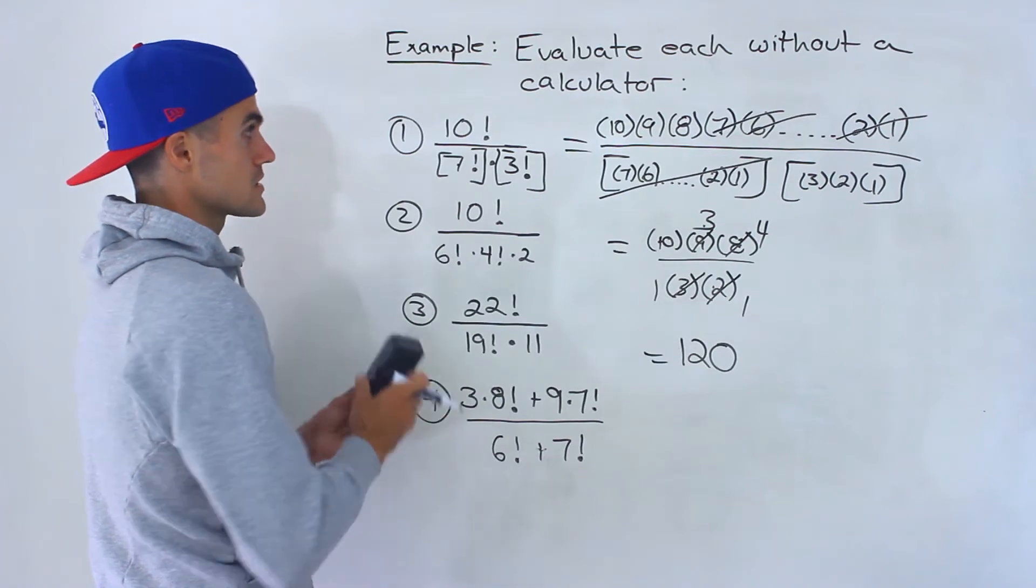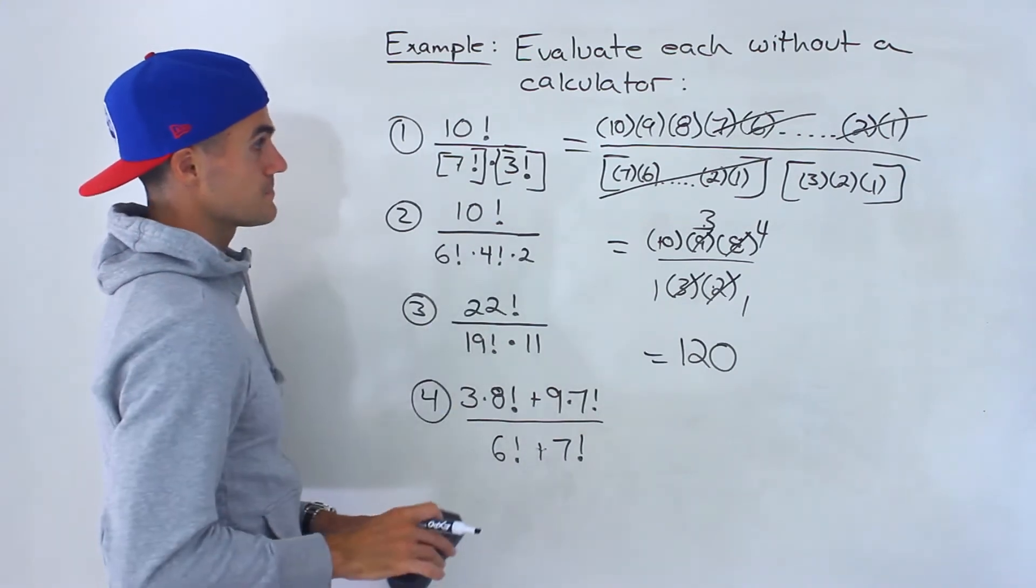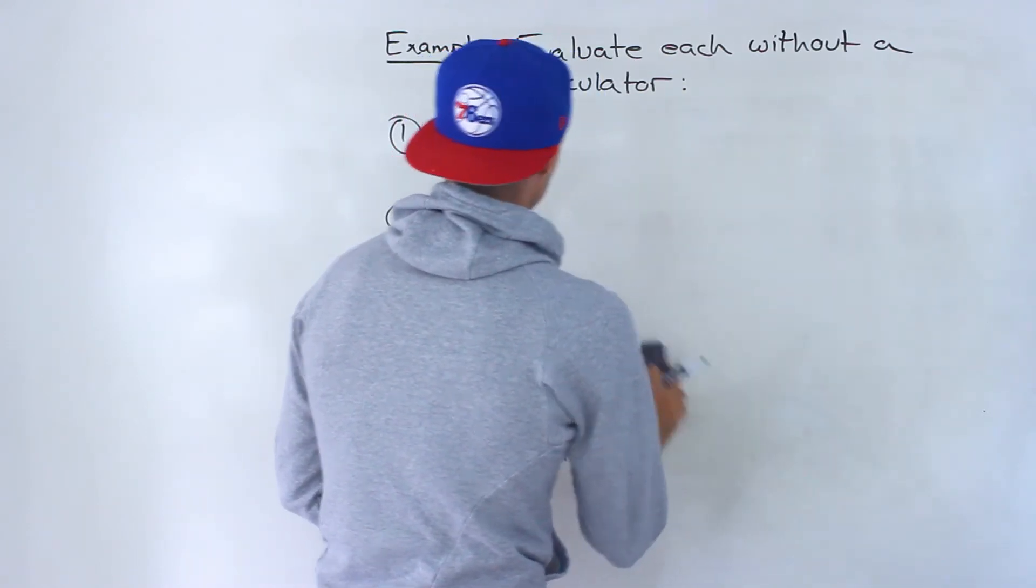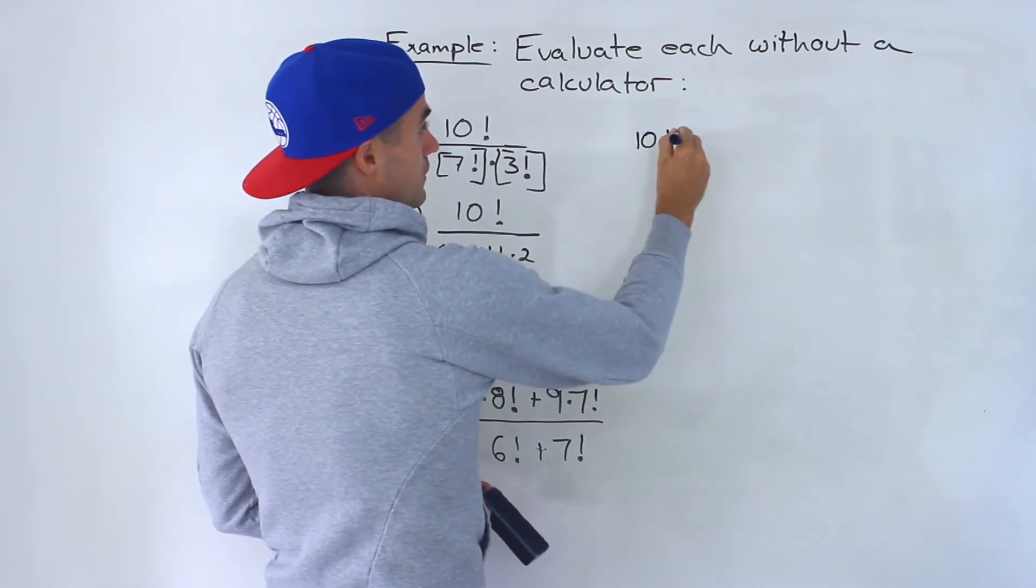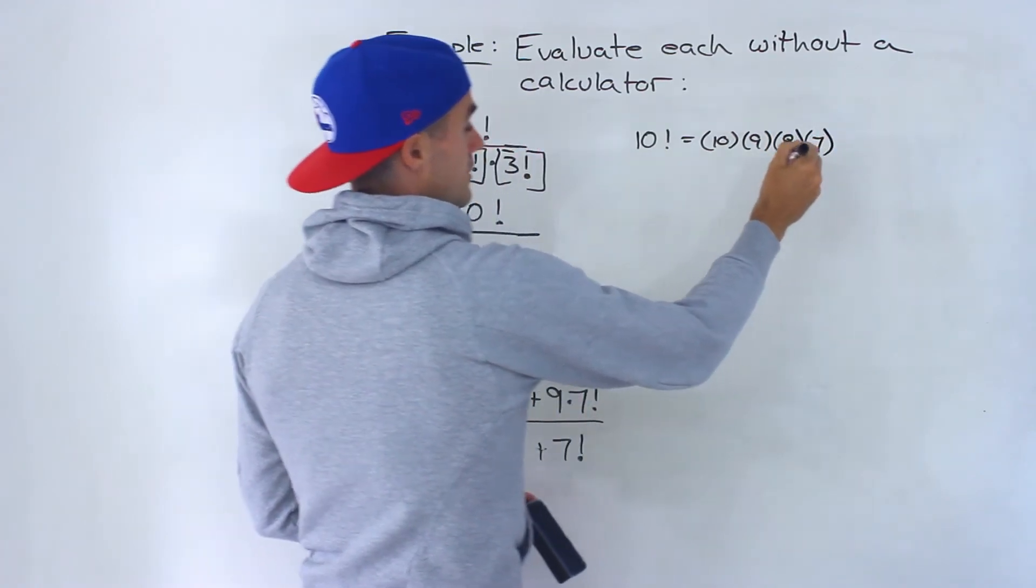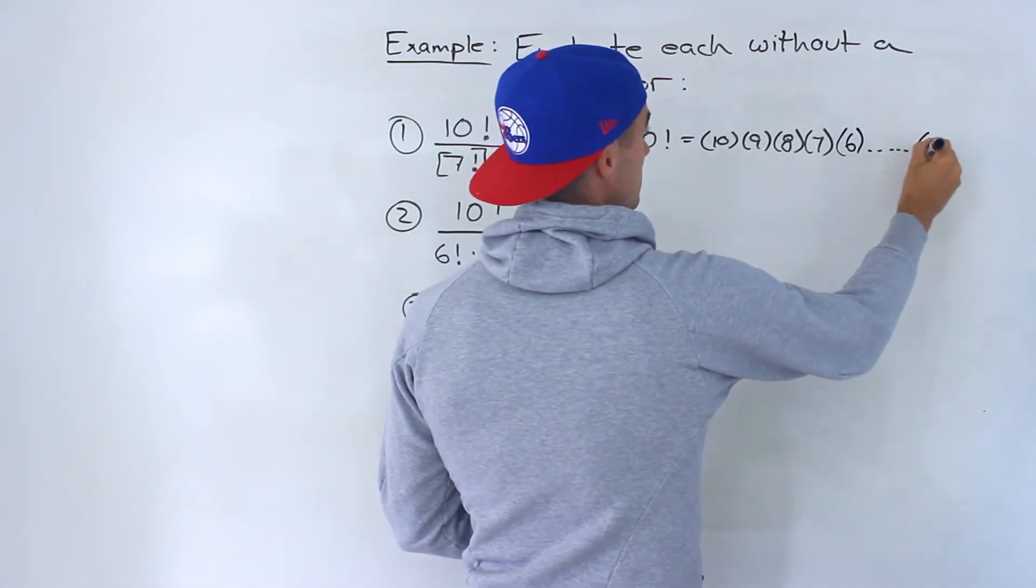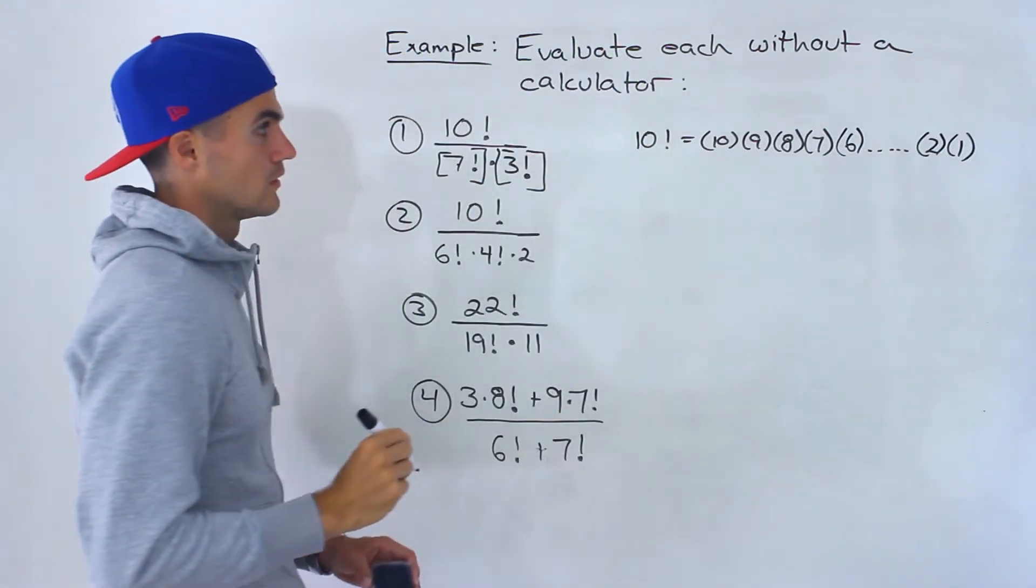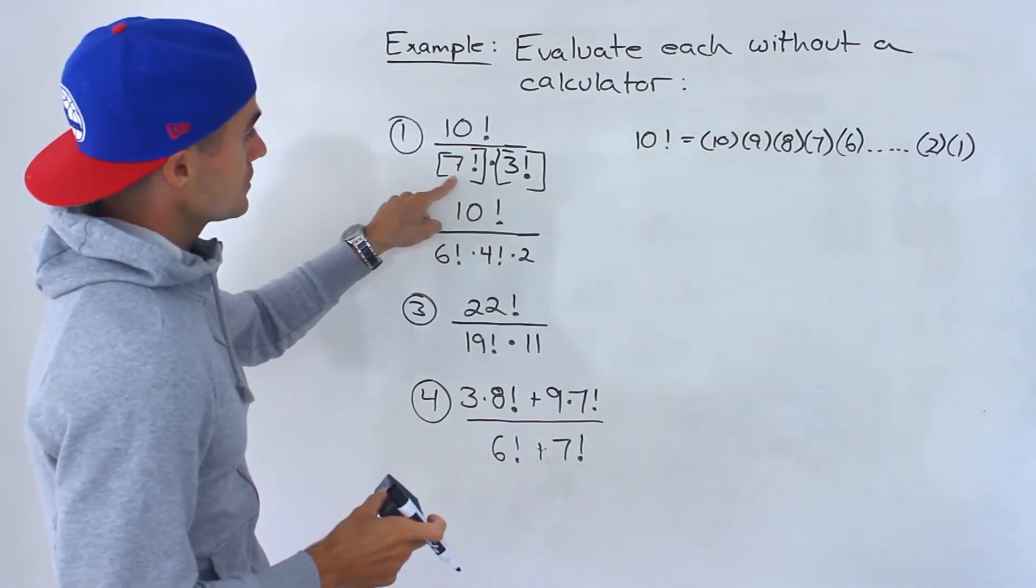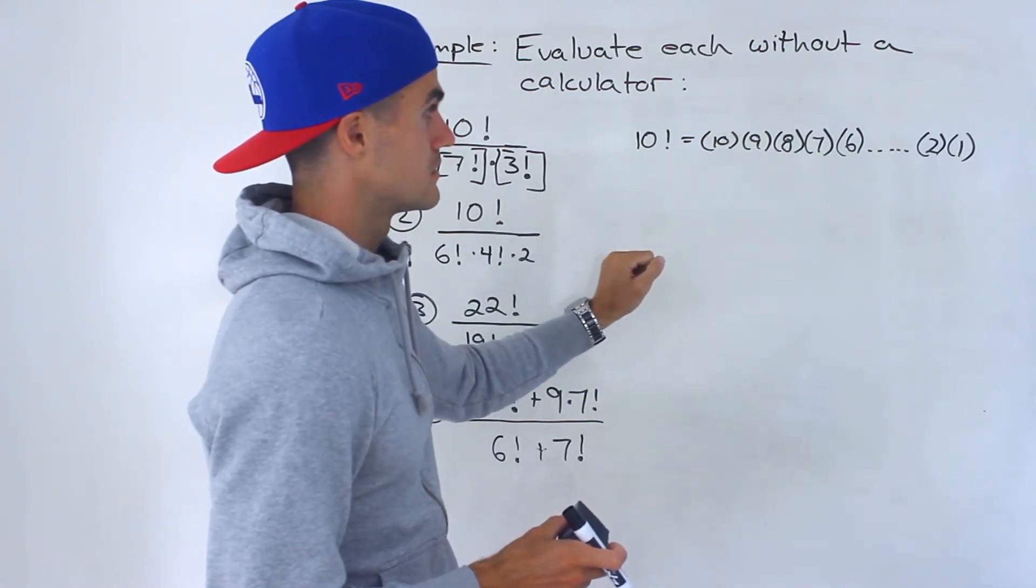Another way you can do this - I'm going to show this for number 4. Notice number 4 is a lot more complex. Another way is you can factor things out. If I got 10 factorial, that's equal to 10 times 9 times 8 times 7 times 6 times 2 times 1. We can factor out - notice there's a 7 factorial here - we can actually factor out a 7 factorial from this.